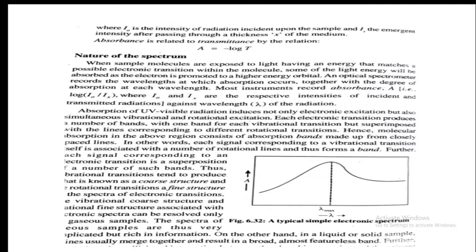When samples are exposed to light energy that matches the possible electronic transitions within the molecule, some of the light energy will be absorbed as the electron is promoted to a higher electronic level. An optical spectrometer records the wavelength at which absorption occurs together with the degree of absorption at each wavelength. Instruments record absorbance, which is log I0 by Ix, against wavelength lambda.